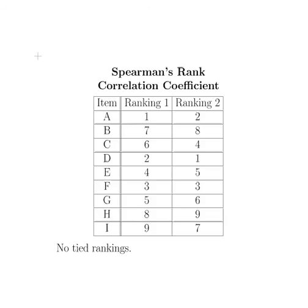So here we have a couple of items — items A, B, C — and we have two sets of rankings. These might be students and two exams: student A comes first in test one and second in test two. Student B comes seventh in test one and eighth in test two. Or it might be two sports competitors in two different competitions.